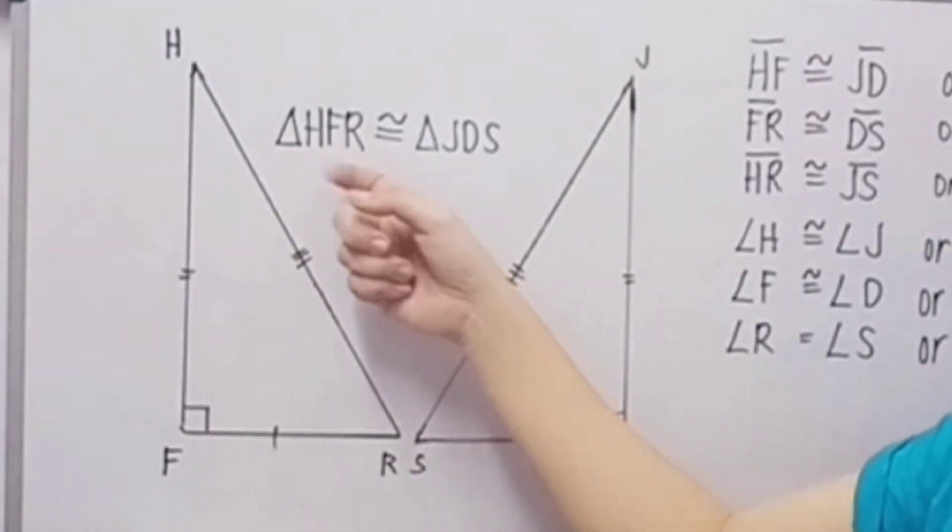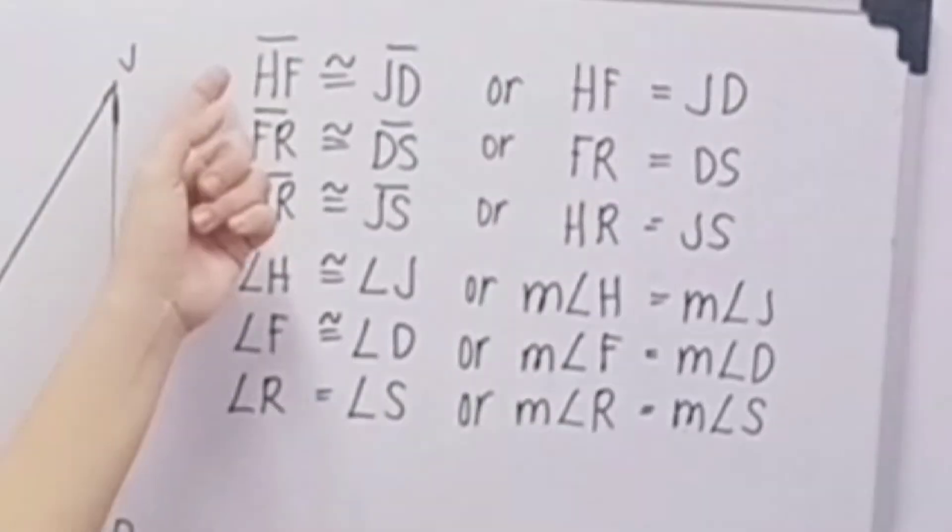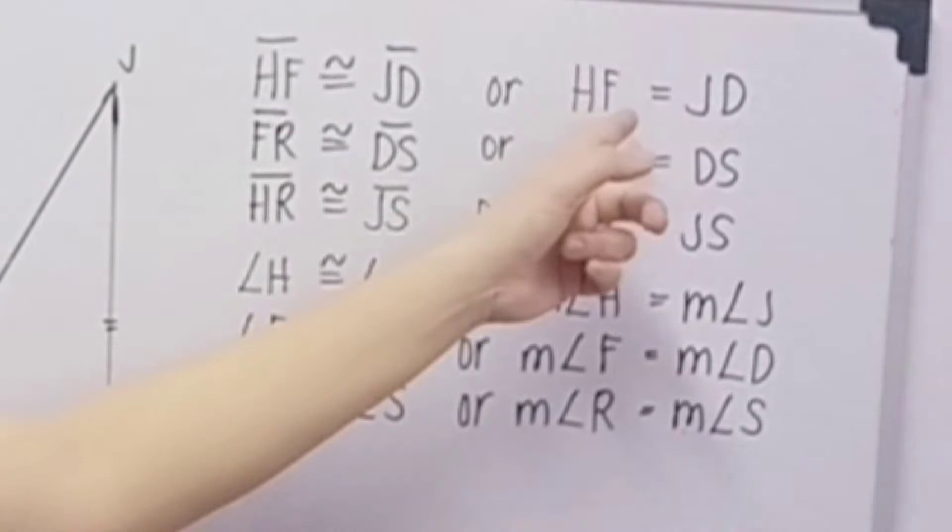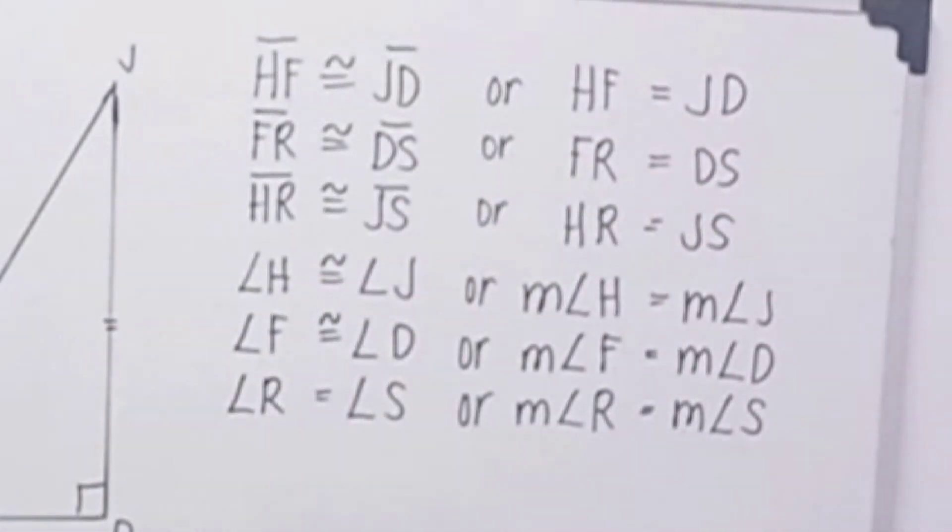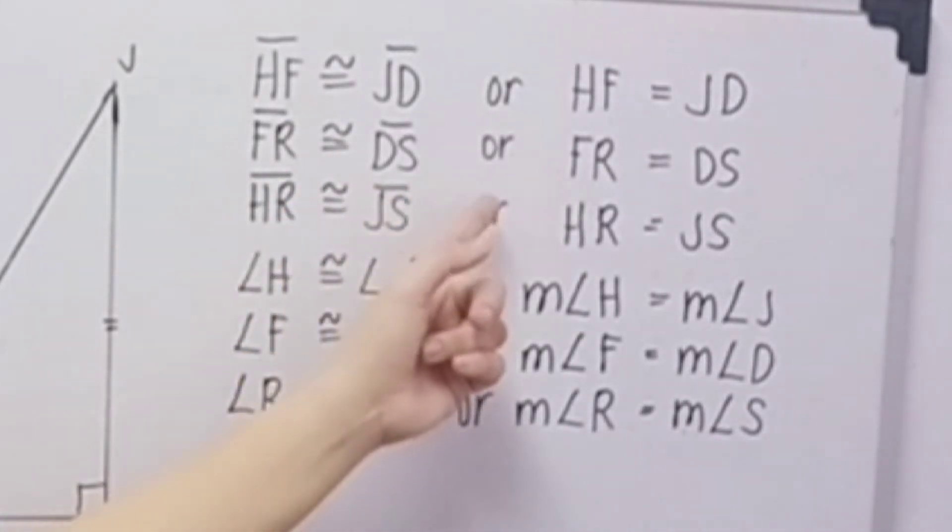Therefore, we can say that triangle HFR is congruent to triangle JDS. So segment HF is congruent to segment JD, or HF is equal to JD. Then segment FR is congruent to segment DS, or FR is equal to DS.